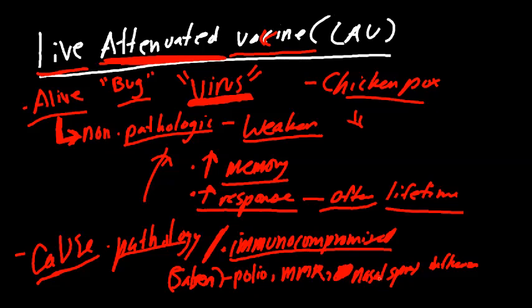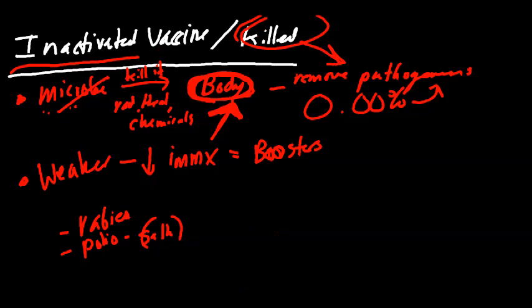If you get an intramuscular shot for the influenza vaccine, that is different from the nasal spray — the stuff you squirt up your nose, kind of like an allergy spray — which is a live attenuated vaccine. Now for the inactivated vaccines, you have rabies virus, polio virus, and influenza — this is going to be the intramuscular injection that you typically associate with a flu shot. These inactivated vaccines are not as robust as the live attenuated.